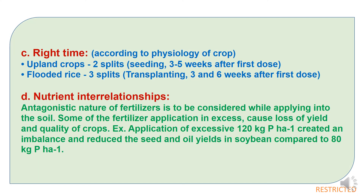The third balancing method is applying fertilizers at the right time according to crop physiology. For upland crops, nitrogen is given in two splits — at the time of seeding and three to five weeks after the first dose. For flooded rice, three splits are used — at the time of transplanting, and then three and six weeks after the first dose. Thus, the right timing is chosen according to crop requirement and physiology.